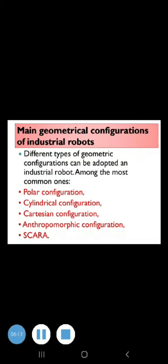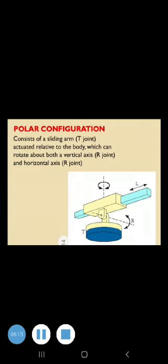First, polar configuration. This configuration consists of a sliding arm (L joint) actuated relative to the body, which can rotate about both a vertical axis and a horizontal axis.